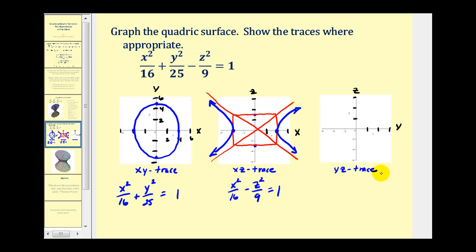And now for the yz trace, we're going to set x equal to zero. So we'll have y squared over twenty-five minus z squared over nine equals one. Again we have another hyperbola.